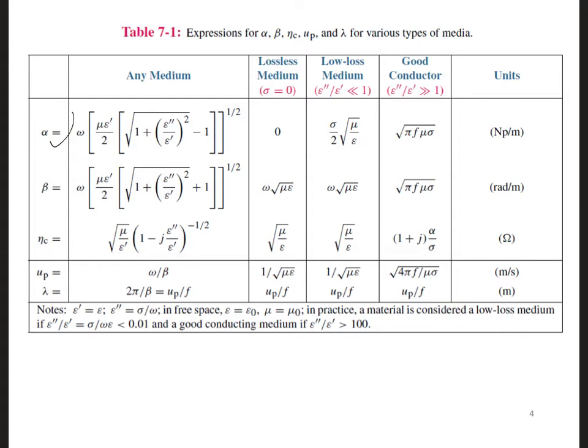You may recall alpha here in the first row, which describes the attenuation rate of waves in the materials. And the skin depth, delta, is the depth at which the fields have decayed to e to the minus 1, or 37% of their value at the surface of the material. The skin depth is defined as 1 over alpha.